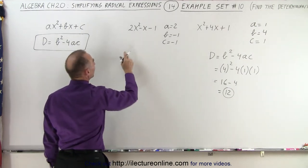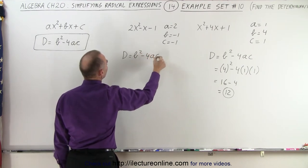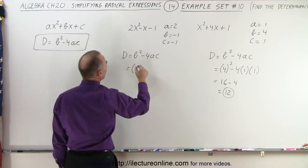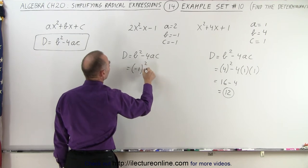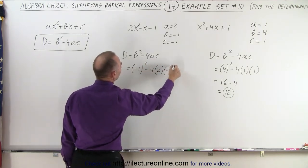We do the same over here. We say that d is equal to b squared minus 4ac. So in this case that's equal to b which is negative 1, quantity squared, minus 4 times a which is 2, times c which is negative 1.